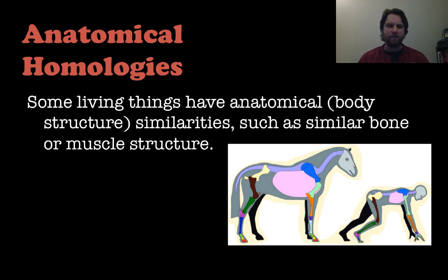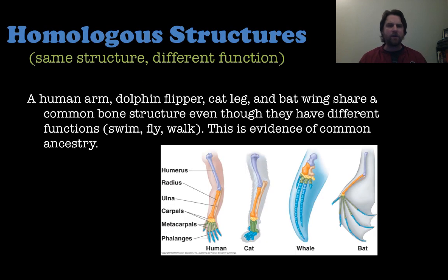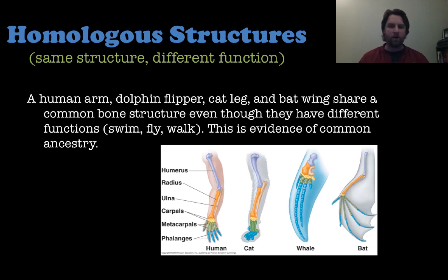Moving on to anatomical homologies — some living things have similar body structures or bone structures that suggest a common ancestor. Homologous structures are the same structure but with a different function. For example, a human arm, a dolphin's flipper, a cat's leg, and a bat's wing all share a common bone structure but have very different functions: swimming, flying, grabbing, or walking. Remember: homologous structure means same structure, different function.